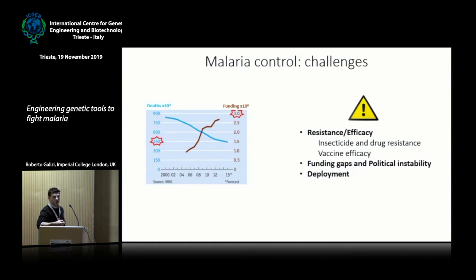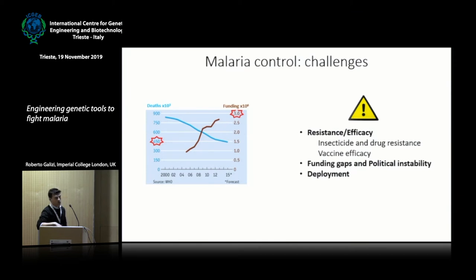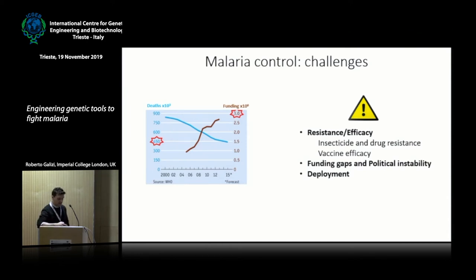However, we've reached the point where, despite the huge amount of funding going into malaria control, we are not able to eradicate malaria in many areas, in particular in sub-Saharan African countries. Some of the reasons we face include resistance to insecticides, the very low efficacy of vaccines, as well as funding gaps, political instability, and difficulty in deploying countermeasures in areas that are very vast and, in most cases, quite remote.